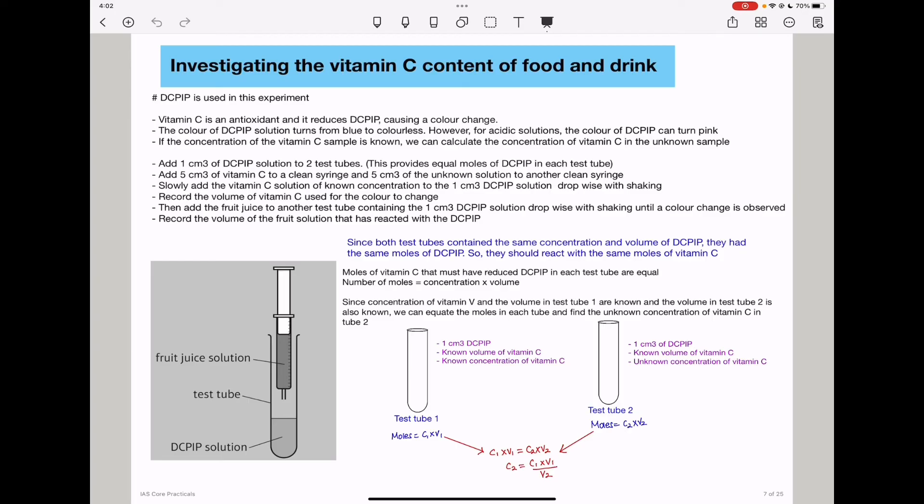And since I'm looking for concentration 2, because I did not know the concentration of vitamin C in that sample, I can make this the subject, and then substitute. Concentration 2 will be concentration of the first sample, times the volume of the first sample, divided by the volume that has come from the second sample.